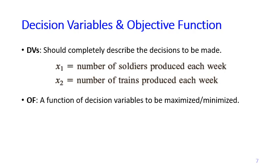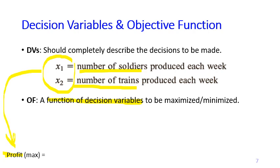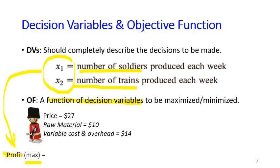The objective function is a function of the decision variables. The profit is the consequence or function of these two variables — it depends on how many soldiers and trains you produce. The objective is to maximize the profit. For one soldier, Giapeto sells it for $27, but it uses $10 of raw materials and $14 in variable costs. So the profit for one soldier is 27 minus 10 minus 14, which equals $3.